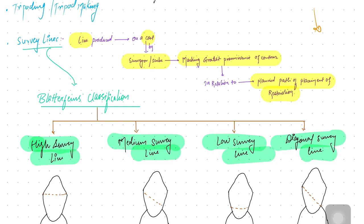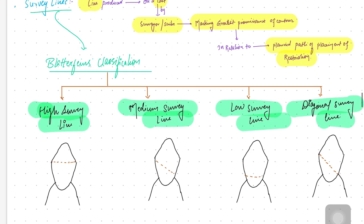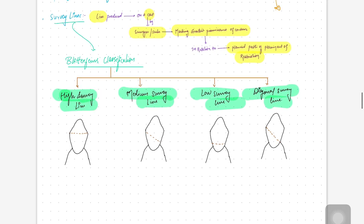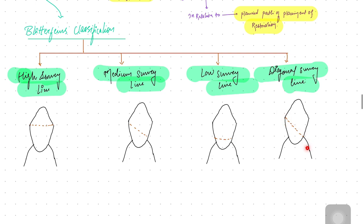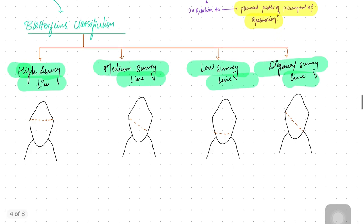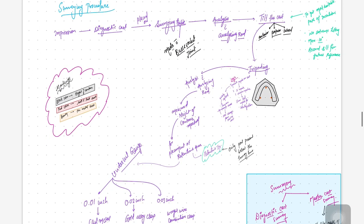The types of survey lines follow Blatterfein's classification. There are four types: high survey line, medium survey line, low survey line, and diagonal survey line.